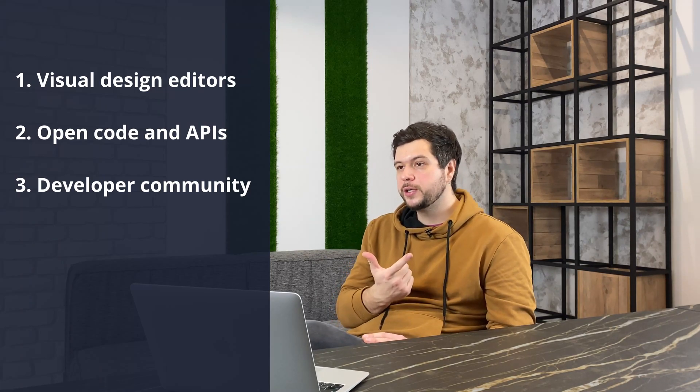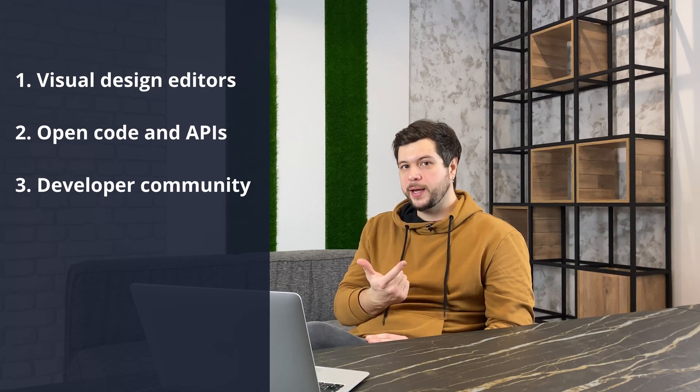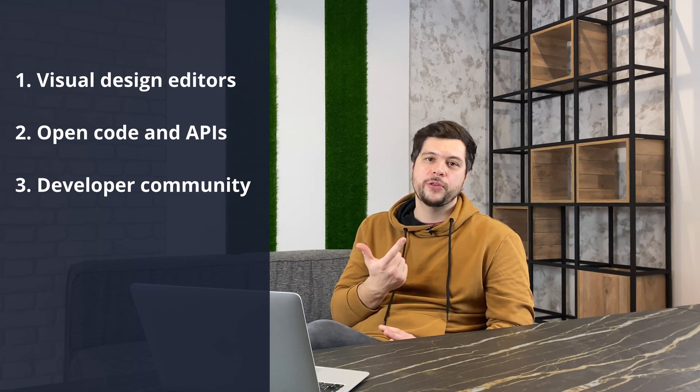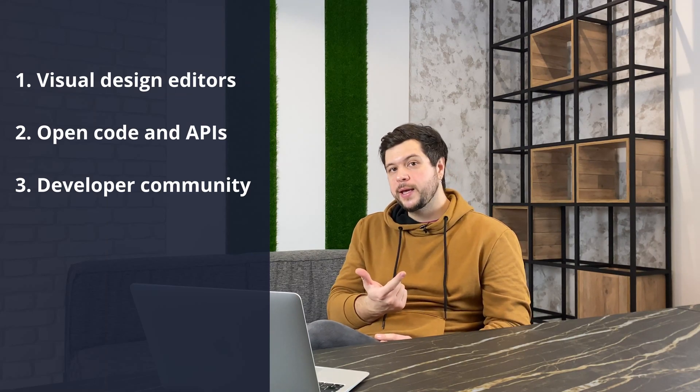To be able to modify the design of your marketplace, make sure your marketplace software has these three features. The first is a set of no-code tools to change the design — visual editors, theme editors, layout editors, landing page builders and so on. The second is open code and API, which will allow you to develop a custom theme or upload a third-party ready-made custom theme. And the third is a big developer community where you can hire a good developer to make a custom theme according to your specs.